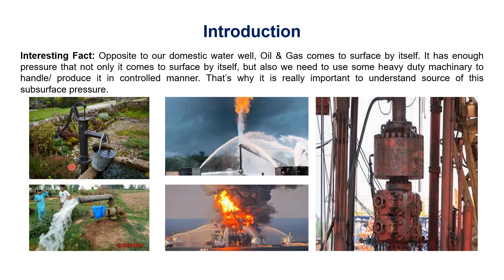Opposite to this, in case of oil and gas, it does not only come by itself — it has a huge energy, and if we do not control it, it will cause a catastrophic incident. In case of oil and gas, it not only comes to the surface by itself, but we also need to use heavy duty machinery to handle and produce it in a controlled manner. This means that oil and gas have huge pressure in them. We need to control it because if we do not, it will cause a huge incident we call a blowout. To control the pressure of this fluid, we need heavy duty equipment called blowout preventers.